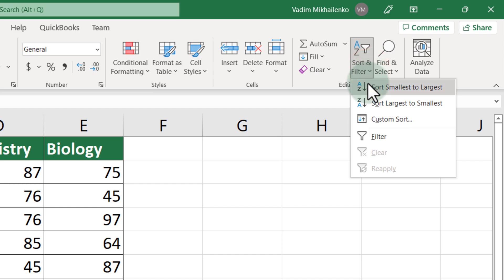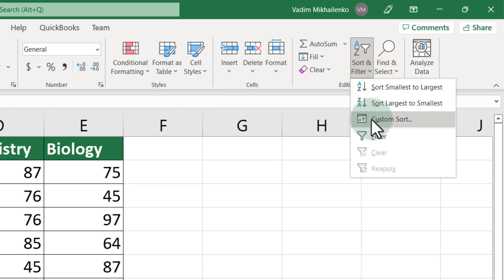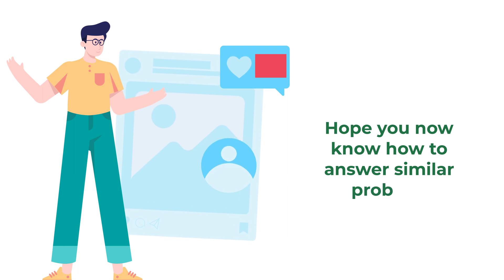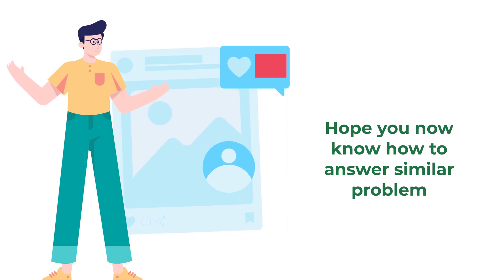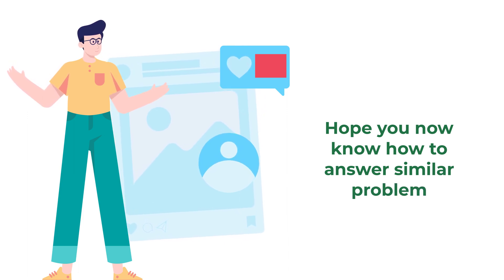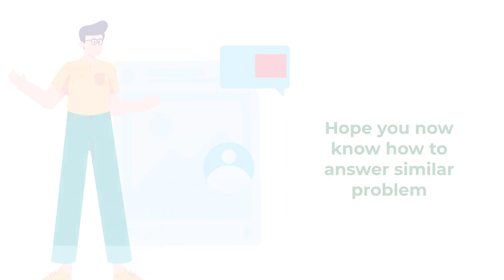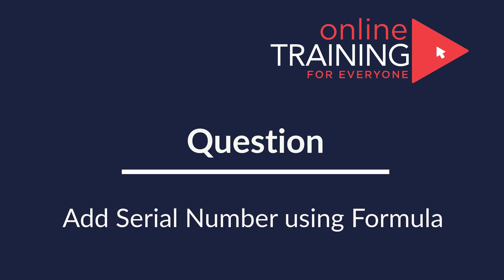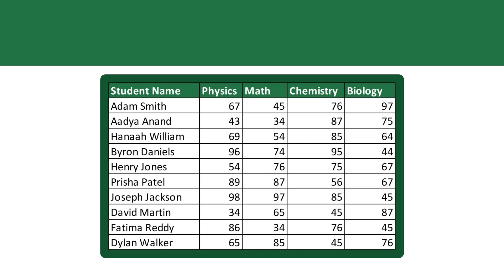To recap: to sort data in Excel you can either use Sort Smallest to Largest or the Custom Sort function. Hopefully you've nailed this question and now know how to answer similar problems on the test.